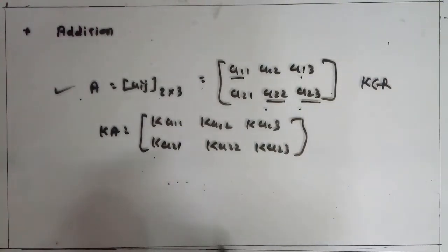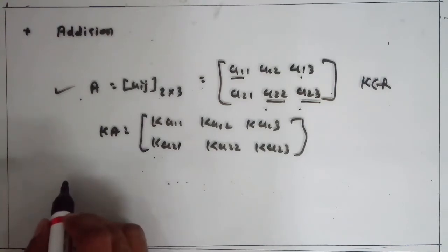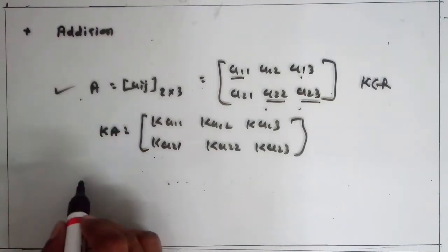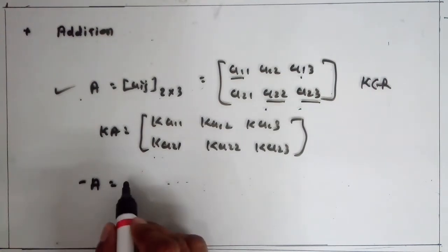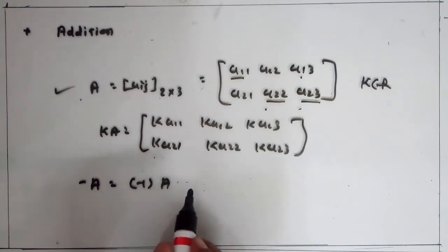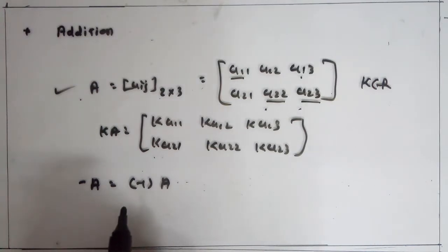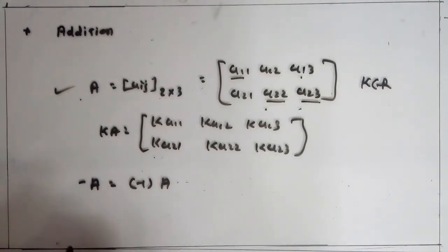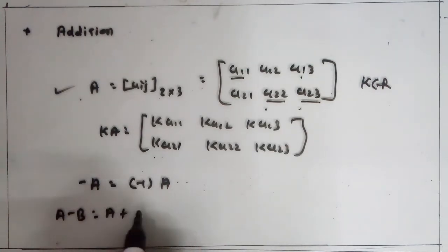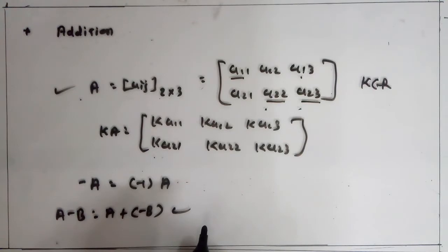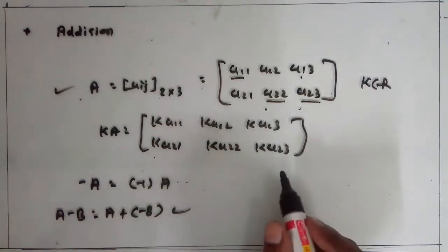Next, the negative of a matrix. For matrix A, minus A is equal to minus 1 into A. That is, multiplying any matrix with minus 1, we get the negative of the given matrix. Next, the difference of matrices: A minus B is equal to A plus the negative of the second matrix, that is A plus (minus B). So this becomes the difference of two matrices.